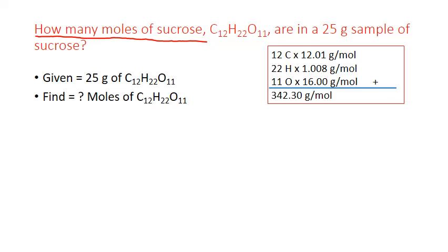We add to that our 22 hydrogen times the periodic table mass of hydrogen, 1.008. And we add 11 times 16 grams per mole for the oxygen. And that gives us 342.30 for our molar mass. And here's that stated in terms of an equivalence. One mole of sucrose equals 342.3 grams.